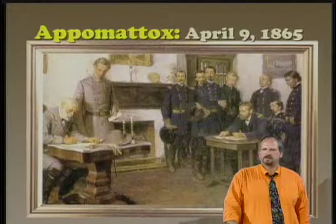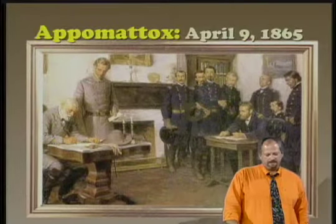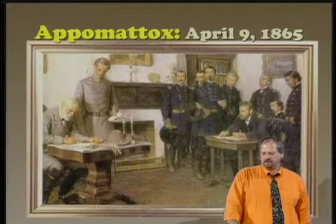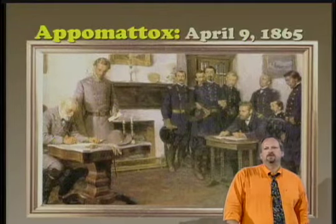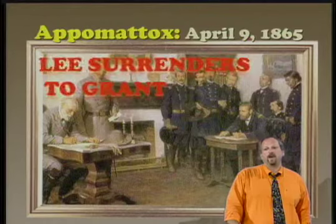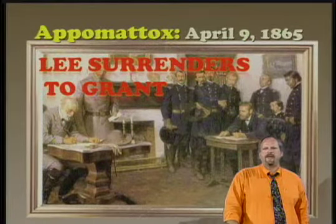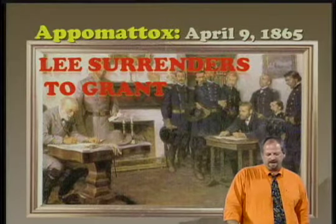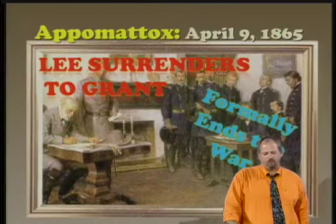On April 9th, 1865, after Petersburg and Richmond had fallen, Robert E. Lee was willing to negotiate terms of surrender to Ulysses S. Grant at Appomattox Courthouse. This formally ended the Civil War.